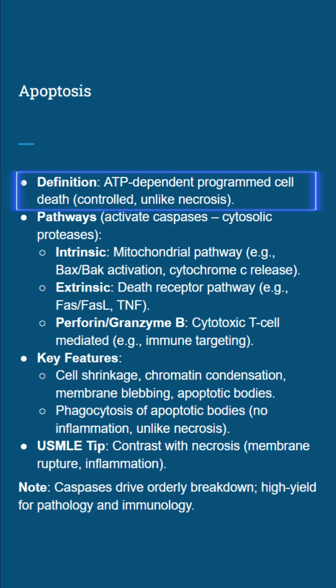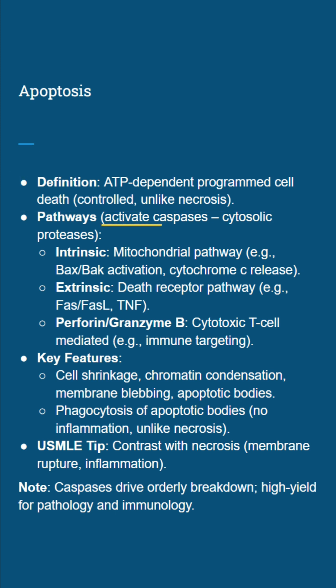Apoptosis is ATP-dependent programmed cell death. Think of it as controlled suicide, not the chaotic explosion of necrosis. It's triggered by three main pathways that all converge on activating caspases — those cytosolic proteases that methodically dismantle the cell.